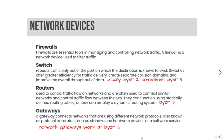Routers are used to control traffic flow on networks and are often used to connect similar networks. They can function using statically defined routing tables or they can employ a dynamic routing system. Routers operate at layer 3. A gateway connects networks that use different network protocols — also known as protocol translators — and can be standalone hardware or software devices. Network gateways also work at layer 3.